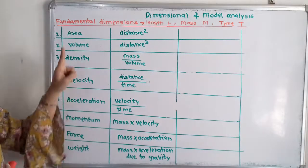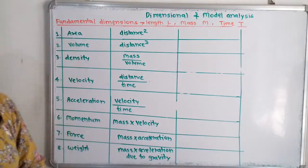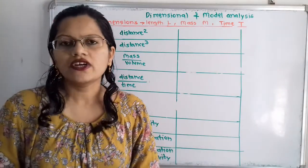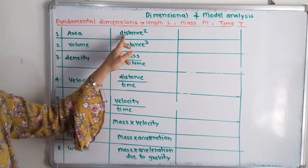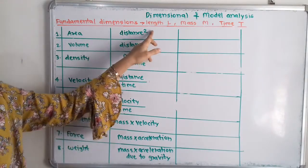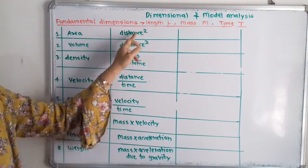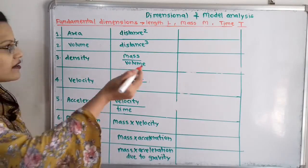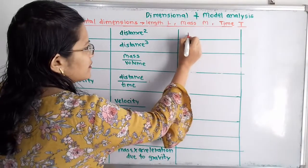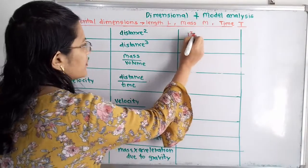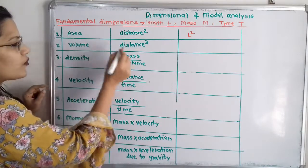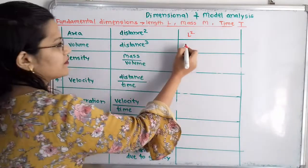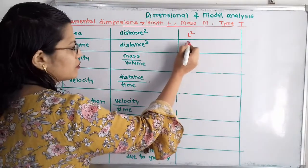We will take the first physical quantity, that is area. How we can define area? Area we can define as distance squared. Distance we will take as length, so I will write here length squared, that is L squared. Then volume — volume we will take as distance cubed, that is L cubed.